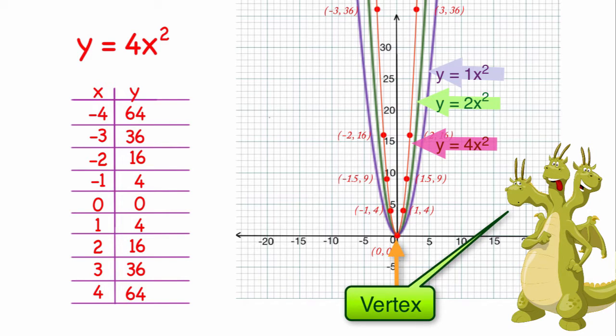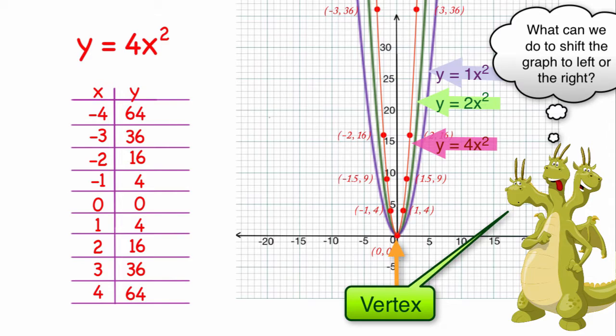So it would be great to figure out, maybe next time, how to shift that graph over. It looks like we're going to have to change something to our original equation besides putting a number in front.